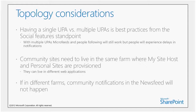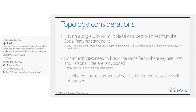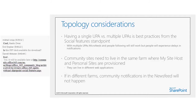Some farm topology considerations: we recommend having a single user profile application versus multiple, because using a single UPA will be much faster in terms of notification delivery. Community sites will need to live in the same farm where your My Site Host is. If the community is not in the same farm, you won't see community notifications — things like starting a new topic, liking a post, or getting a best reply — in the news feed.